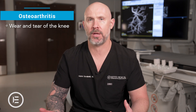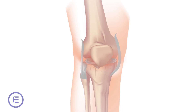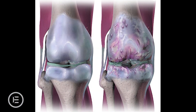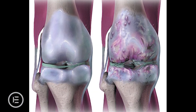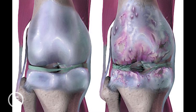What does wear and tear of the knee mean? We have two bones that join at the knee — your femur and your tibia. In between those bones, there's soft tissue called cartilage and meniscus, which provide a buffer between the two bones so they don't grind on each other. Over time with usage, that cartilage can wear down, causing the knee to be bone on bone, which can cause inflammation and pain.